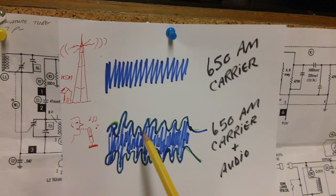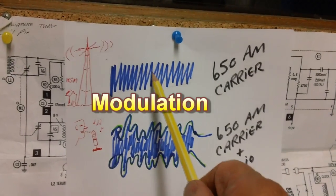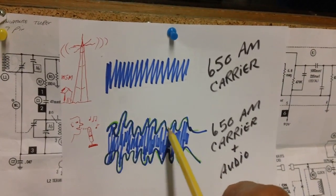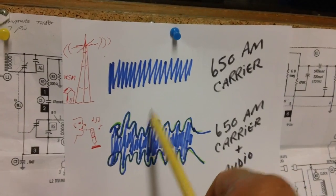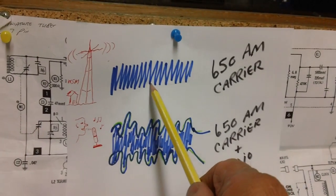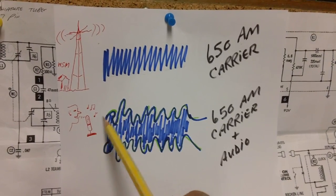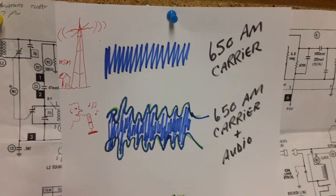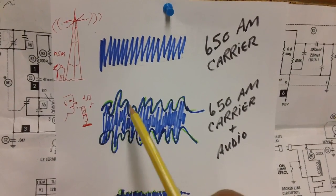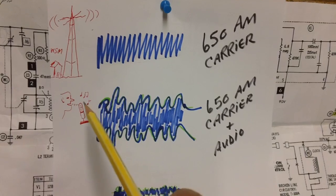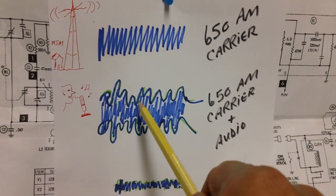That's called modulation. The RF carrier is carrying the audio, just like a horse carries a rider. When you put the voice on it, you're modulating the carrier at the audio frequency of the voice. The human voice has what's called random frequency — whatever frequency that person is talking at is how that carrier is going to be modulated.